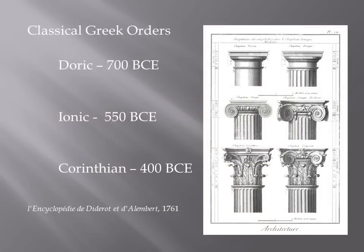Why is there so much made of this idea of columns and capitals — capitals especially? Simply because it gives us a timeline. It tells us when buildings were built and created, and there are distinguishing characteristics that have to do with regions. The names of the classical Greek orders come from the regions or cities most closely associated with their formation. We have the Doric Order from 700 BCE from the region of Doria, the Ionic Order from 550 BCE from the region of Ionia, and the Corinthian Order from 400 BCE from the great city of Corinth.